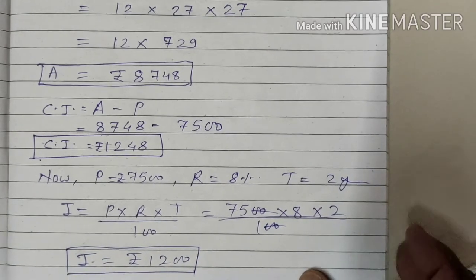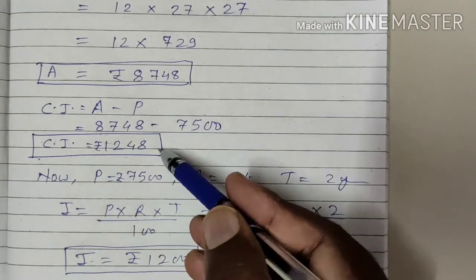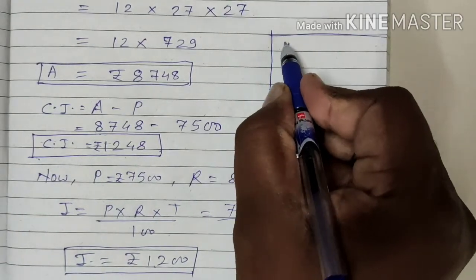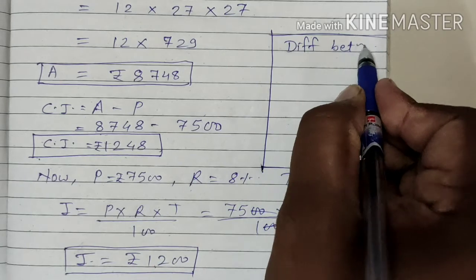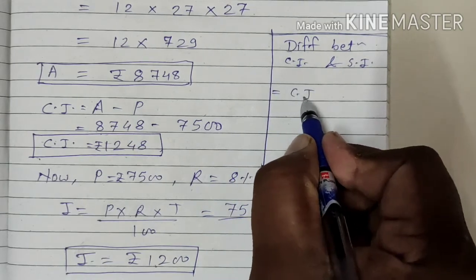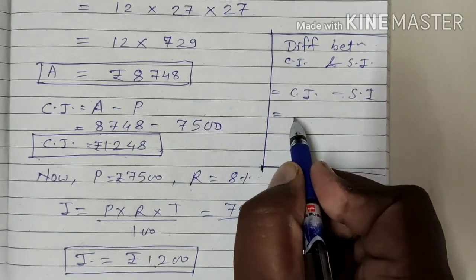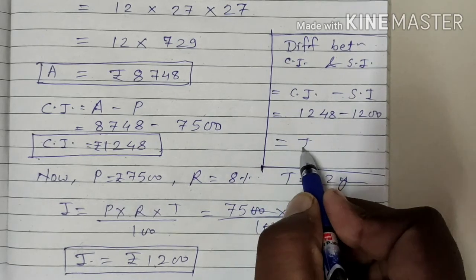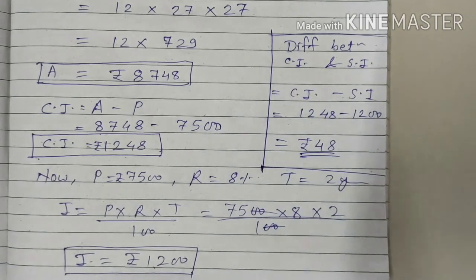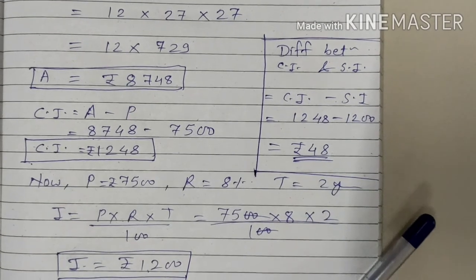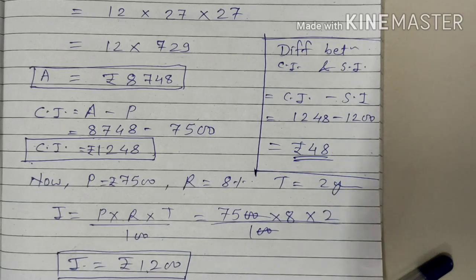Now students, our question was to find out the difference between the compound interest and the simple interest. So the difference = CI minus SI: 1,248 minus 1,200, which gives us Rs. 48. So Rs. 48 is the difference between the compound interest and the simple interest. We will stop here for today. Thank you.